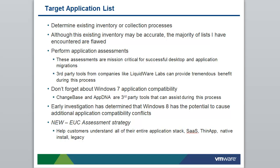Once you've established the use cases, the next critical phase is the target application list. Determine existing inventory or collection processes the customer may have — however, these may be inaccurate. Our recommendation is to perform application assessments. VMware has service offerings around this in the form of a desktop application virtualization assessment and a desktop infrastructure virtualization assessment, both PSO offerings. These assessments are mission critical for the success of a desktop and application migration. Third-party tools from companies like Liquidware Labs can provide tremendous benefit during this process.